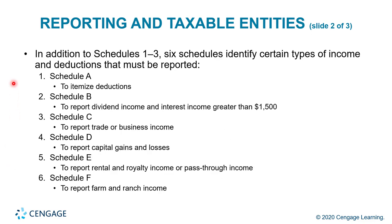In addition to Schedules 1 through 3, six schedules identify certain types of income and deductions that must be reported. Schedule A is for itemized deductions. Schedule B is to report dividend income and interest. Schedule C is for trade or business income. Schedule D is for capital gains and losses. Schedule E is to report rental or royalty income or pass-through income. Schedule F is to report farm and ranch income.